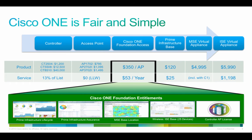For each and every access point you get a single Cisco One Foundation Access license. This license is $350 per access point at list price, and there are discounts for volumes — for more than 500 or more than a thousand the price goes down. For each one of those licenses there's a simple $53 per year software maintenance contract, and that entitles you to the full suite of products, including Prime Infrastructure, Assurance, and MSE-based location, and the Identity Services Engine for 25 devices per license.